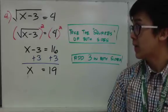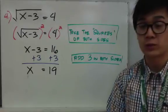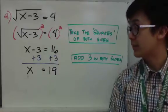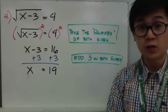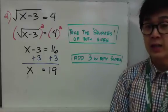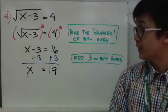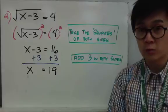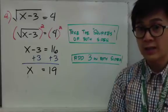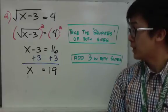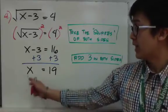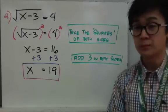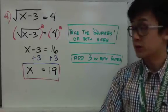So you'll have x minus 3 is equal to 16, because 4 squared is 16. Now to solve for x, it's just a linear equation. You can get rid of 3 by adding 3 on both sides, and now x is by itself — x equals 19. So that is your solution.